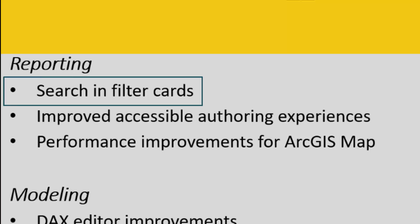Our first feature in the reporting section is search on the filter cards. This sounds like a pretty small feature, but it is pretty impactful. If you are trying to search for a given value within a category to filter your report by, and you have a lot of them — for example, an ID number or something like that — having the search capability really makes a difference in terms of usability. Up until now, we've only had this on our slicers, and so we're excited you can now use it on the filter card as well.